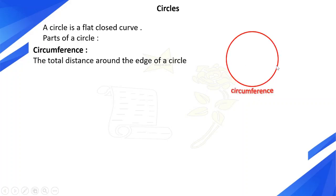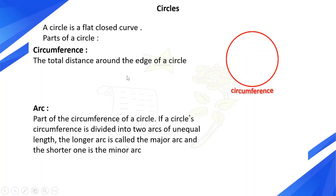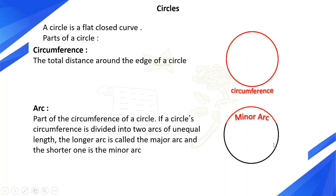This is the circumference. Arc: part of the circumference of a circle. If a circle's circumference is divided into two arcs of unequal length, the longer arc is called the major arc and the shorter one is the minor arc.